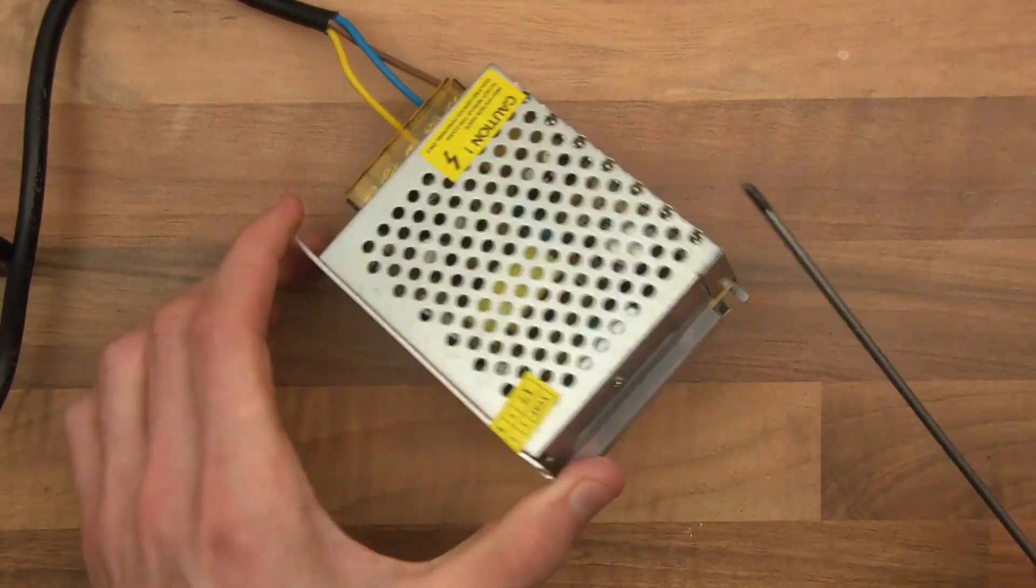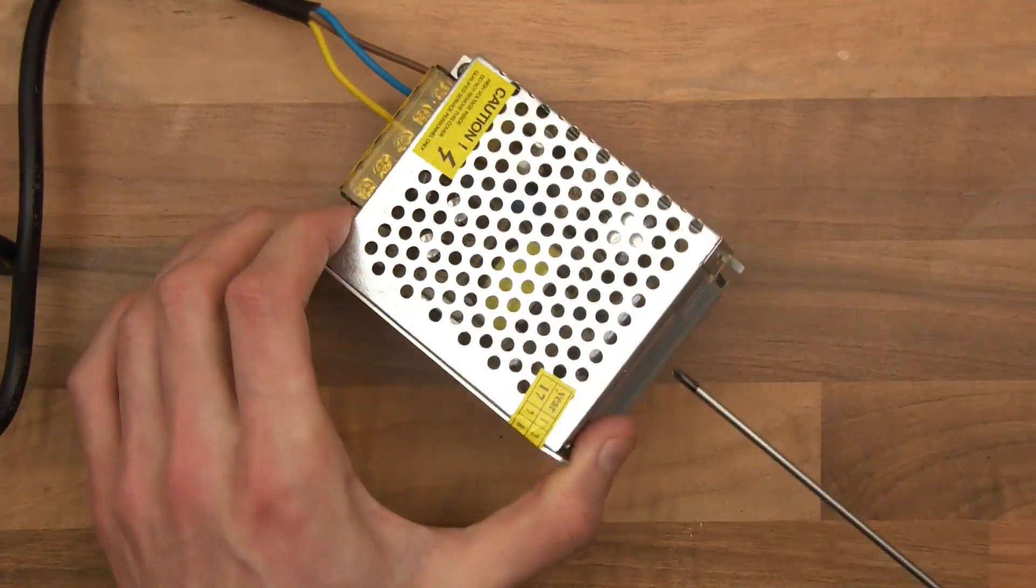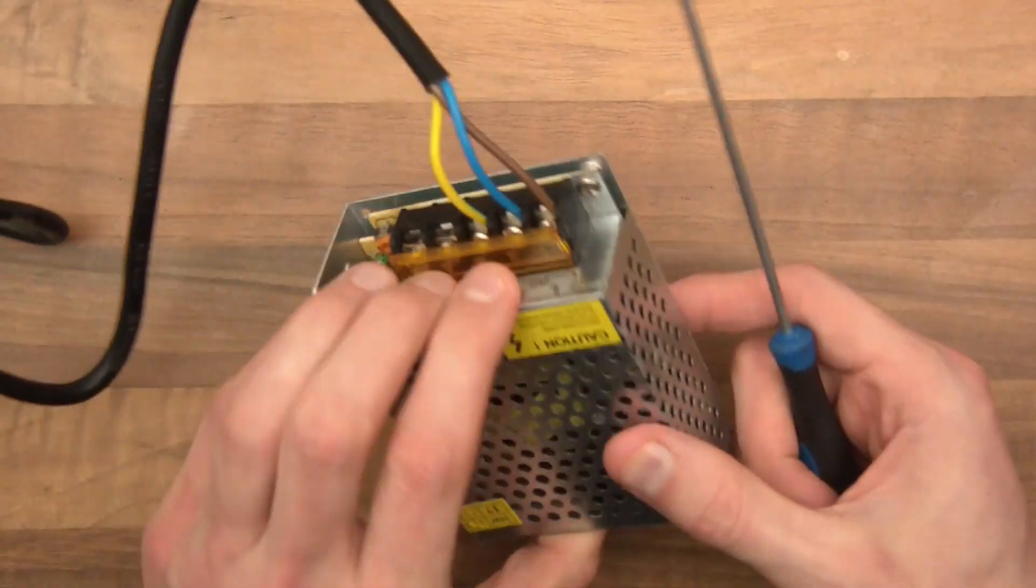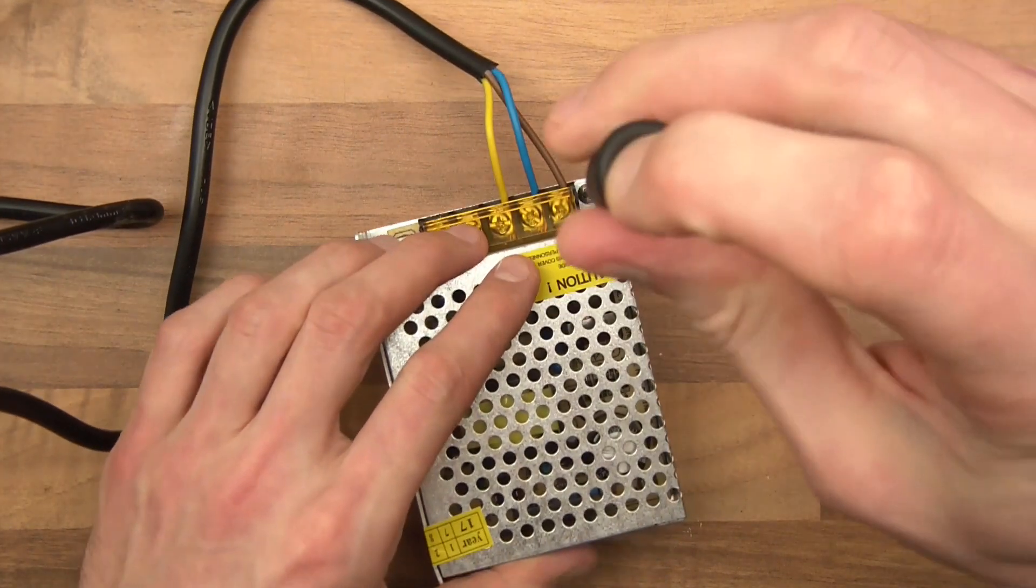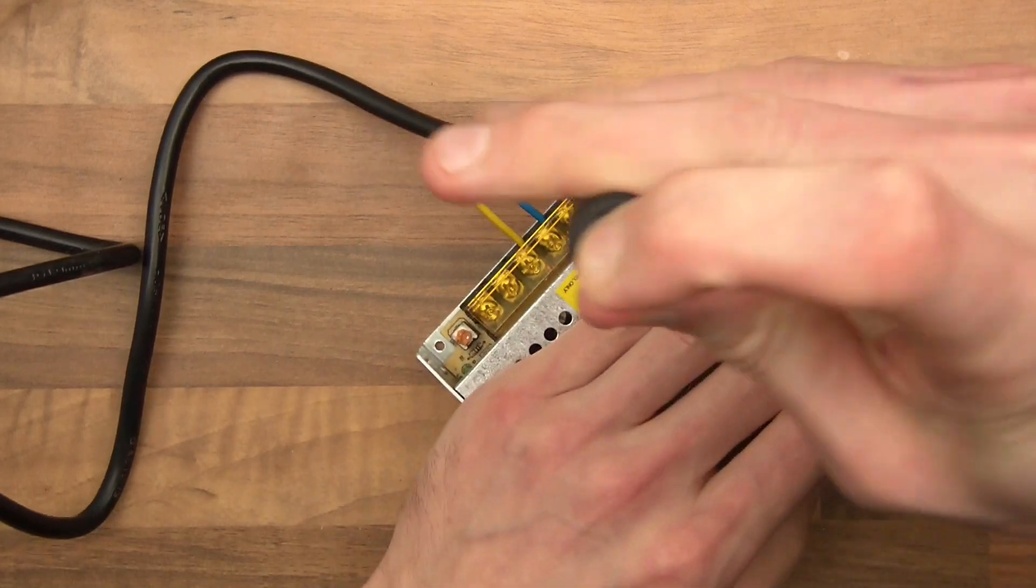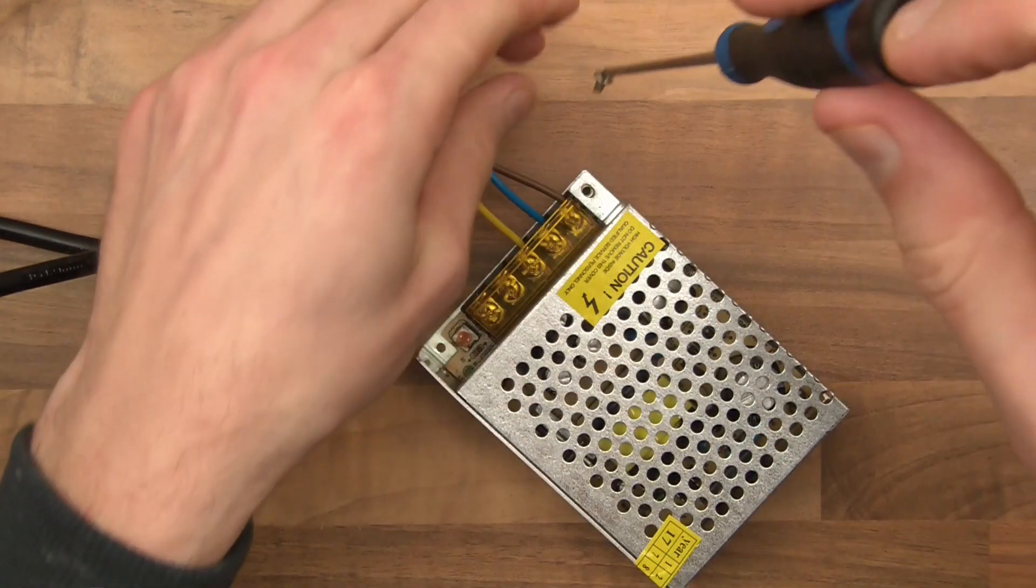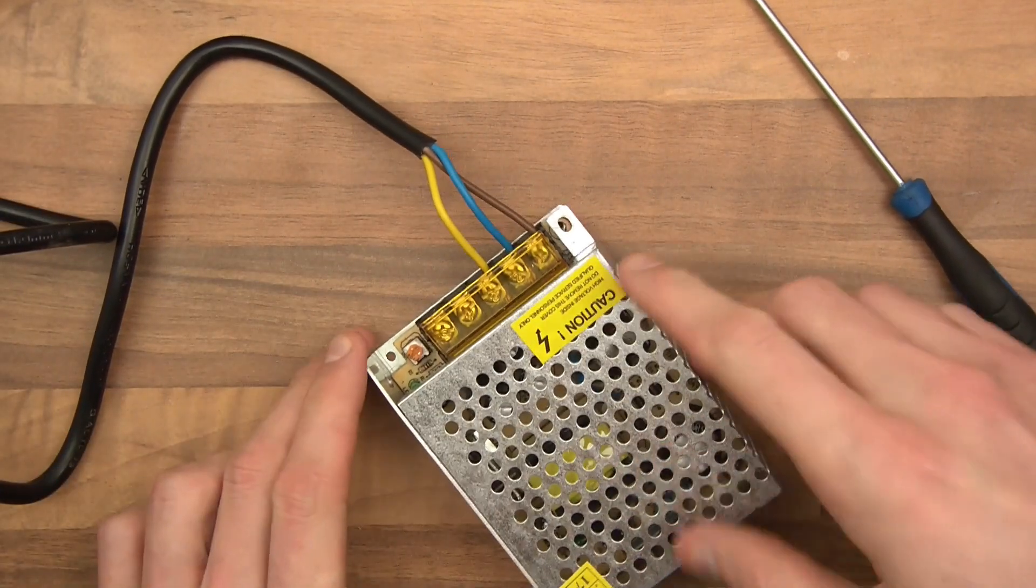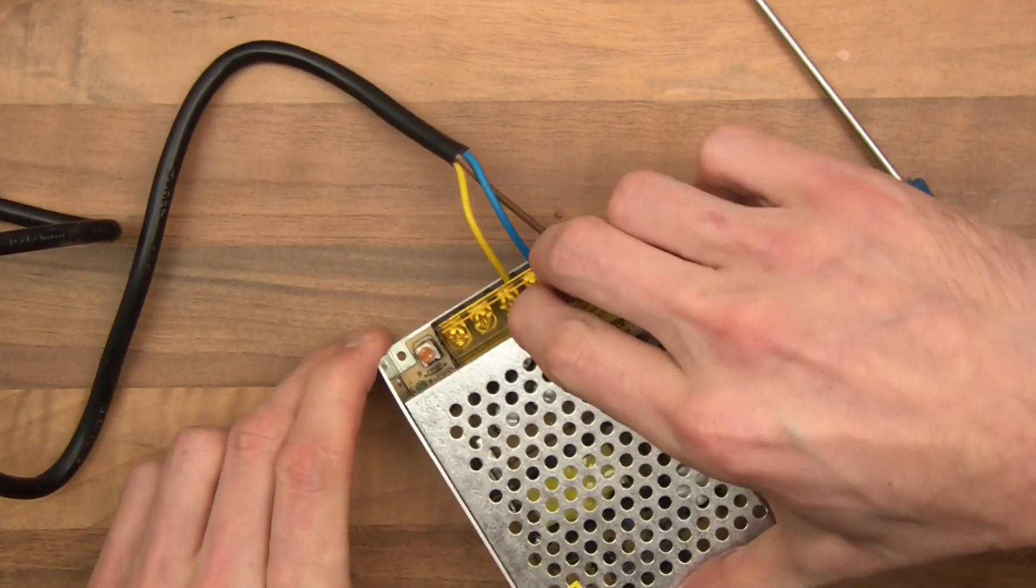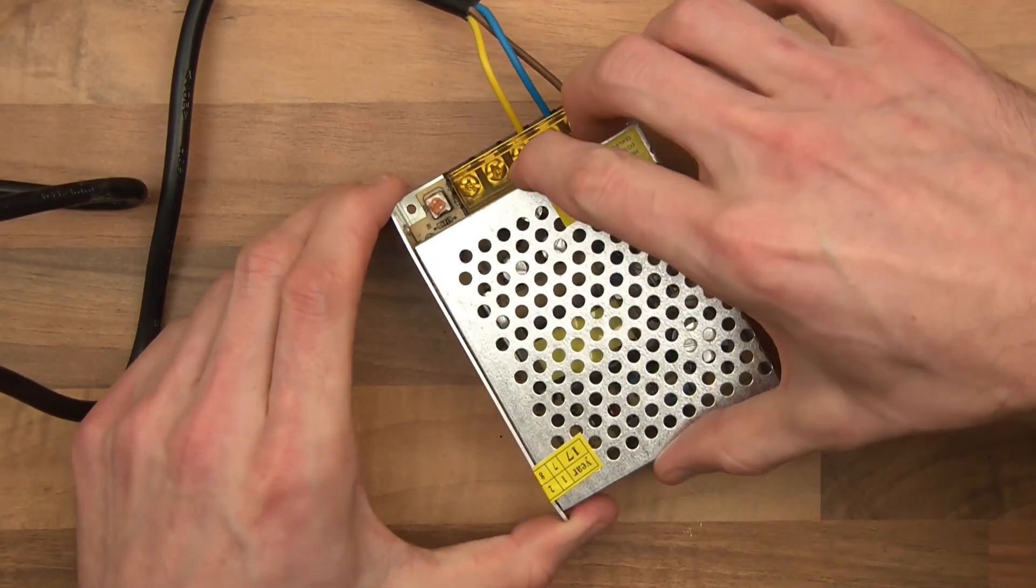Right, so how do I open this? How do I open it? That's the question. I guess that's something to do with it there. Let's see. All right, so I've undone that and it just comes straight off. That's good. Wow, that's a strong bit of tape.